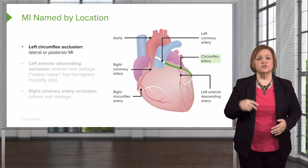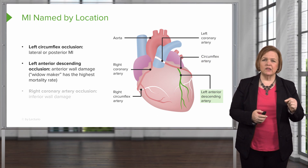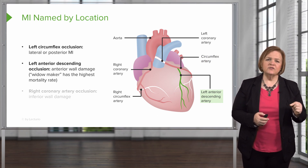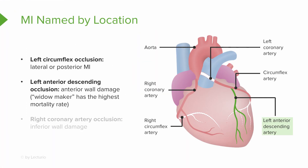So a left circumflex occlusion means a blockage in the left circumflex artery. But here's the widow maker — left anterior descending occlusion. Find that on the graphic and look what it feeds. It's the widow maker because it has the highest mortality rate. It's anterior wall damage, and that's going to really take out your left ventricle, which is why it's such a significant heart attack.